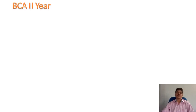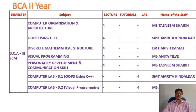Now, focusing on subjects for the second year — third semester students are going to study: computer organization and architecture, object oriented programming using C++, discrete mathematical structure, visual programming for software development, communication skills, and labs based on C++ and visual programming. Here are the names of the staff who will handle the respective subjects. You can have a look. This is about second year third semester students.